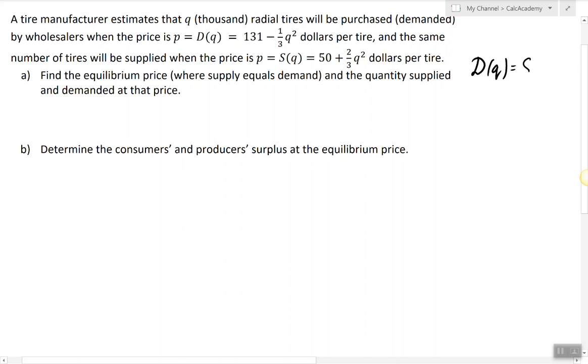This gives us a quadratic equation which we should be able to solve relatively fast. So collecting all the q's on one side gives us q squared here and all the numbers on the left will give us 81.